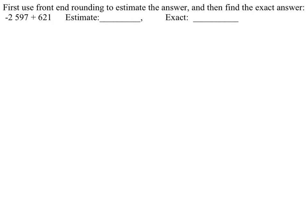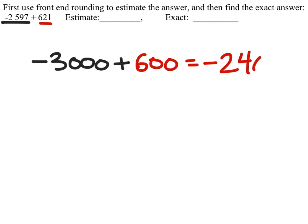It says front end rounding, so what this means is we're going to use the front number, the number farthest to the left, and round that number. So negative 2,597 would be rounded to negative 3,000. And then we would add this to rounding that 621, which would just make that 600. So negative 3,000 plus 600 would give us negative 2,400.